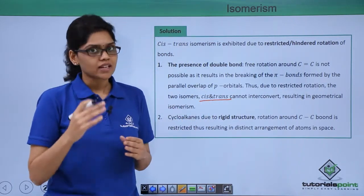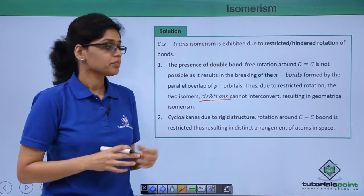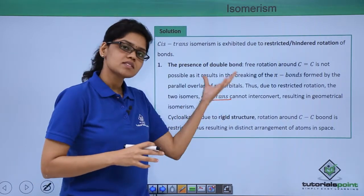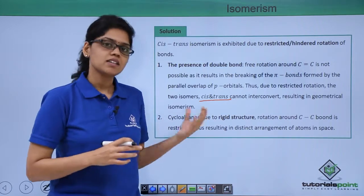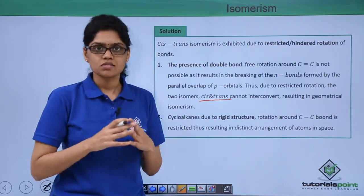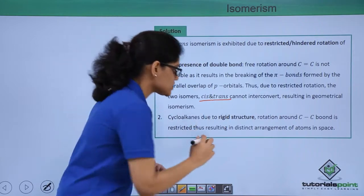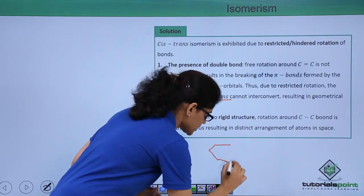Let us go to the second case where we are talking about cycloalkanes. Cycloalkanes also exhibit the same phenomenon of restricted or hindered rotation such that these systems also exhibit cis-trans isomerism. Let us take an example of a cycloalkane which is cyclohexane.